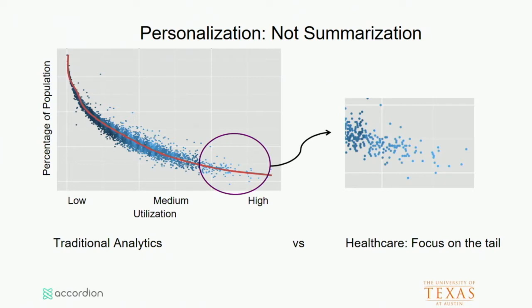The issue with healthcare — you see the low, medium, high there? The low and medium is 90% to 95% of the population. And the sad part is, modeling them may not help change the cost curve. What really matters is the tail. So you have to focus on those 3% to 5% that really matter, and understand them extremely well. Because if you understand those 3% to 5% very well, you can bend the curve significantly.